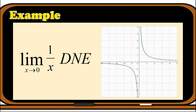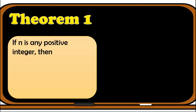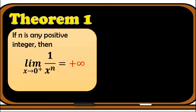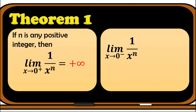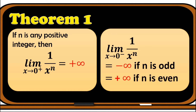From this example, we can now state the theorems for infinite limits. If n is any positive integer, then the limit of 1 over x raised to n as x approaches 0 from the right is equal to positive infinity. On the other hand, the limit of 1 over x raised to n as x approaches 0 from the left is negative infinity if n is odd, and positive infinity if n is even.